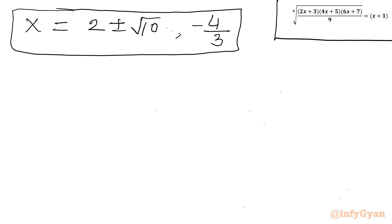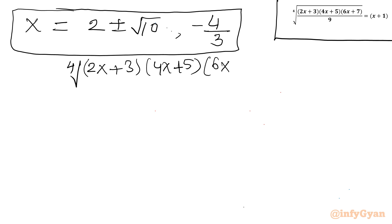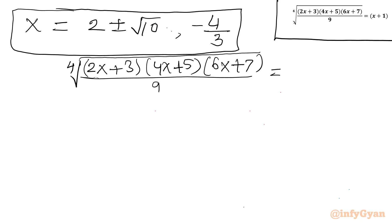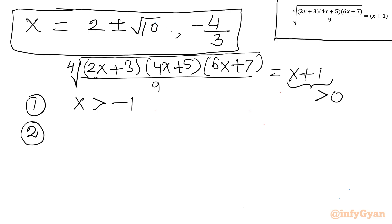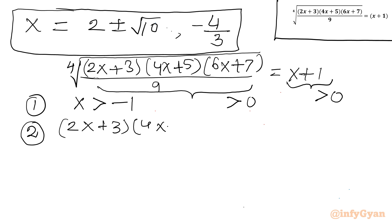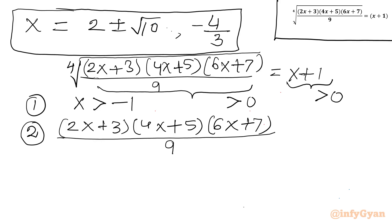Looking at the original equation — the 4th root of (2x+3)(4x+5)(6x+7)/9 = x+1 — the RHS must be greater than 0, so x > −1 (Condition 1). The radicand (2x+3)(4x+5)(6x+7)/9 must also be positive (Condition 2). Using the sign convention and number line method, x must be greater than −7/6, or x must be in the interval (−3/2, −5/4).